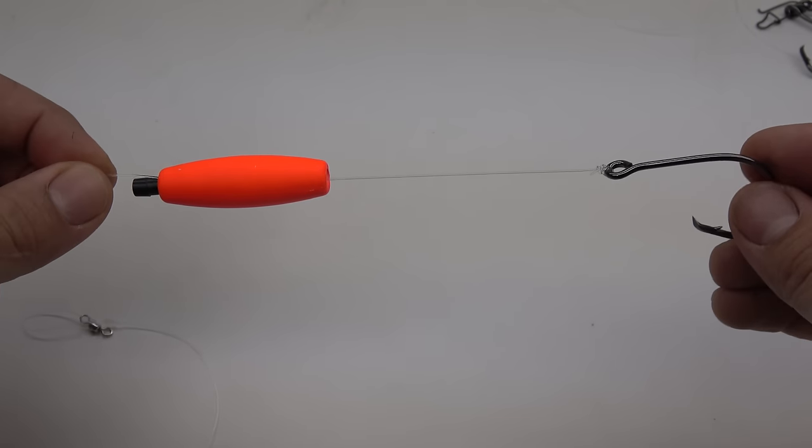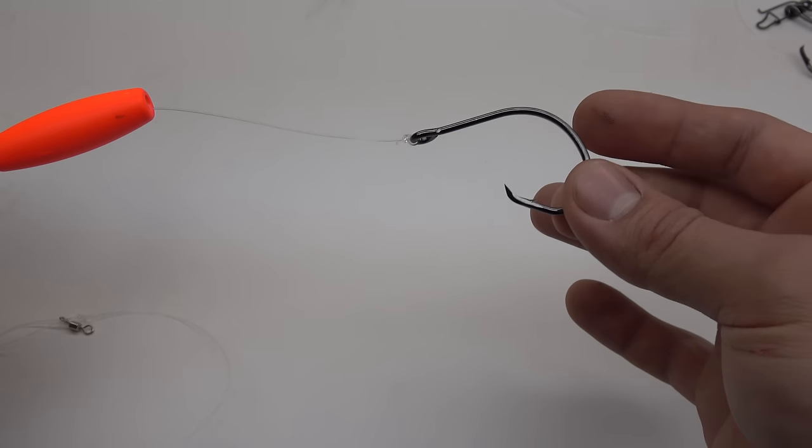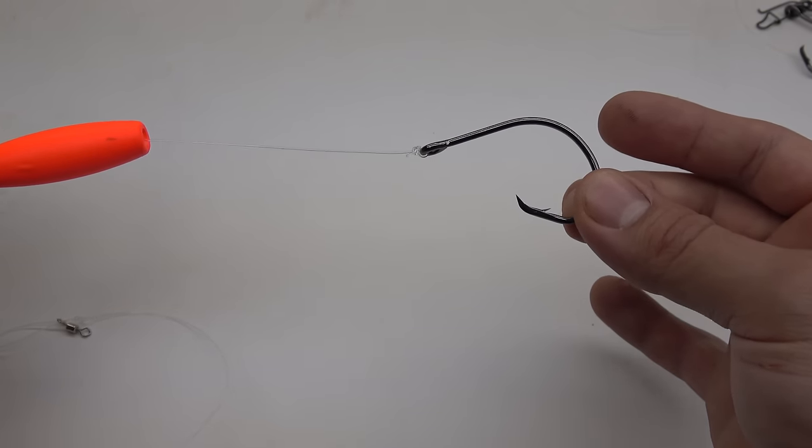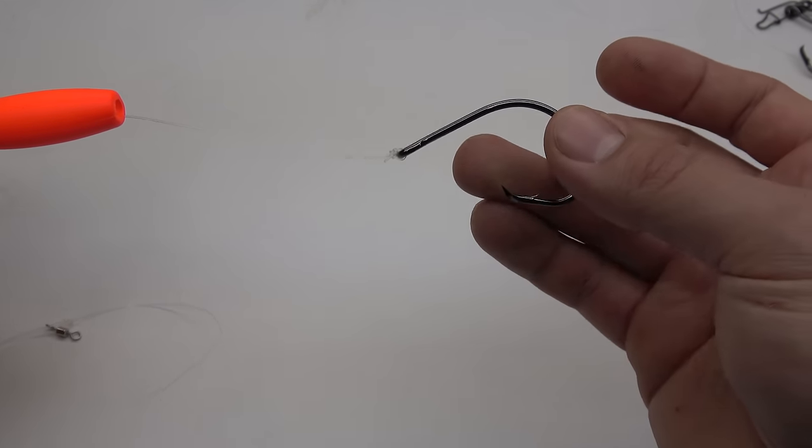I have also found that you get more aggressive takes when you're suspending the bait off the bottom. They will hit multiple times and they will keep hitting until you have the opportunity to apply pressure so the hook sets or they set the hook on themselves.